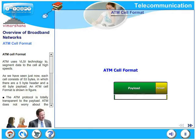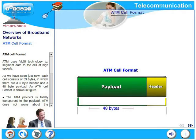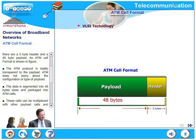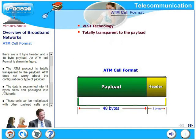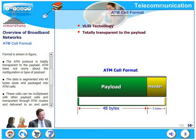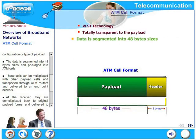Let's look at ATM cell format. ATM uses VLSI technology to segment data into cells at high speeds. Each cell consists of 53 bytes, in which there are 5 bytes for header and 48 bytes of payload. ATM protocol is totally transparent to the payload — ATM does not worry about the configuration or type of payload. The data is segmented into 48-byte sizes and packaged into ATM cells.